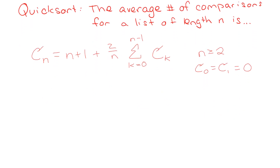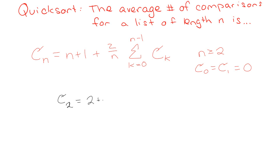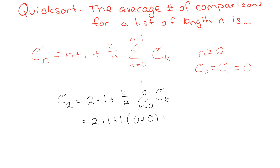So c₀ = 0 and c₁ = 0. For c₂, we get 2 + 1 + (2/2) times the sum from k = 0 to 1 of c(k), which is 2 + 1 + 1 × (0 + 0) = 3. So c₂ = 3.